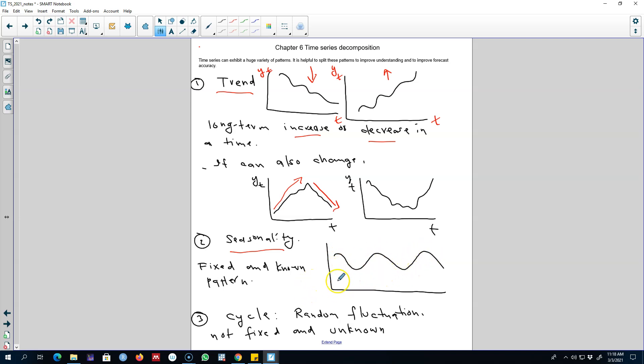So we may observe seasonality in the data set, and then we may observe cyclicality in the data set, which means there may be random fluctuations—that is, your series may go up and down without any fixed and known frequency, and that pattern is called a cycle pattern.